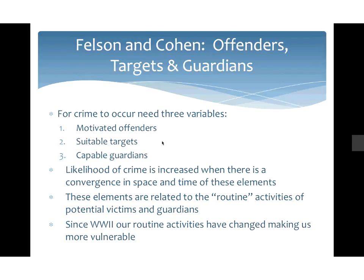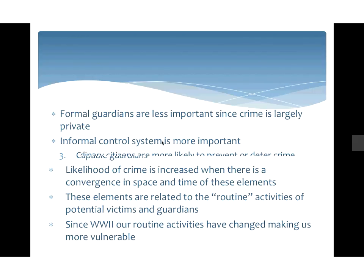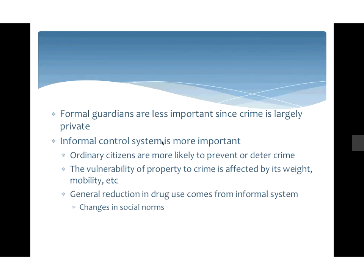When we talk about capable guardians, we don't need them to be actual police officers — any one of us can serve as a guardian. If you see two kids fighting at a football game and you stop them, or you walk home with a friend late at night, you're providing capable guardianship. Informal control is much more important here. Think about the expensive items most of us carry daily — phones, electronics, laptops — that makes us suitable targets because we have high-quality goods.